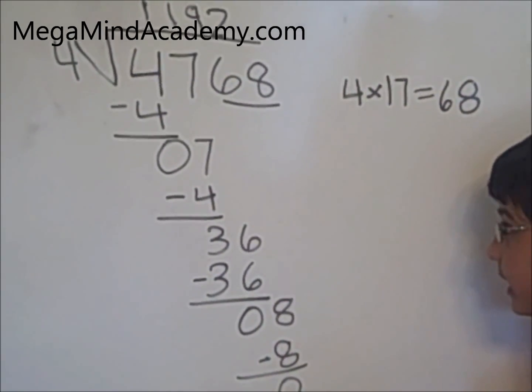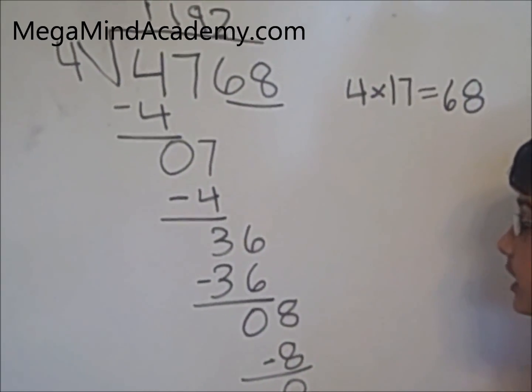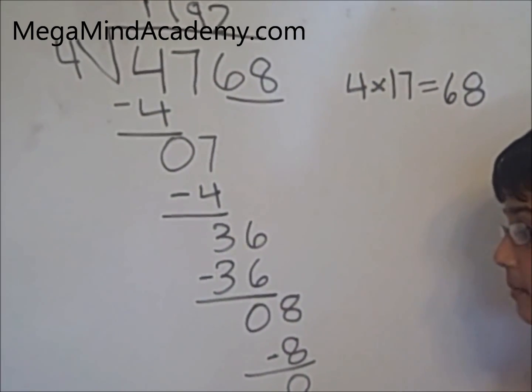Since zero is the remainder, 4768 is equally divided by four.